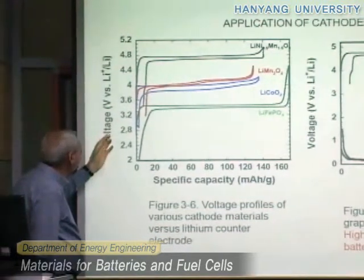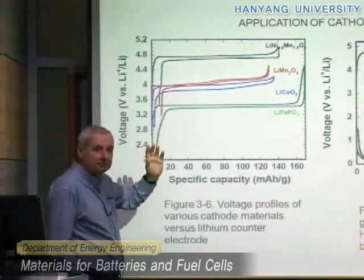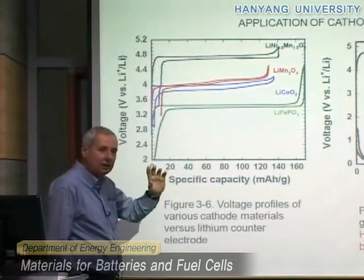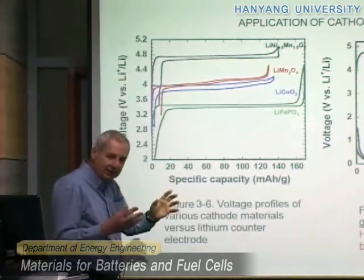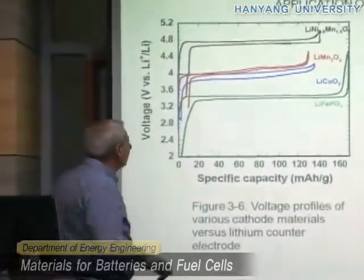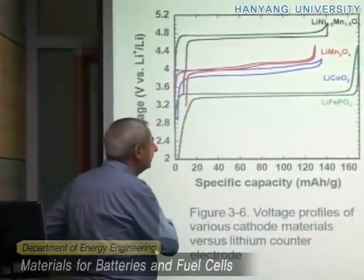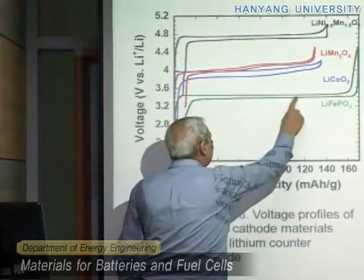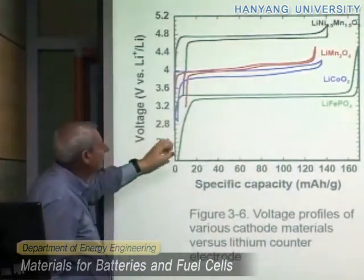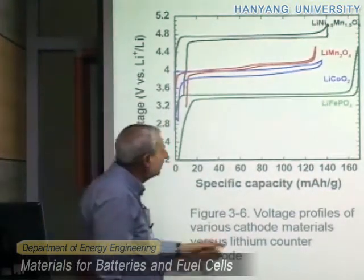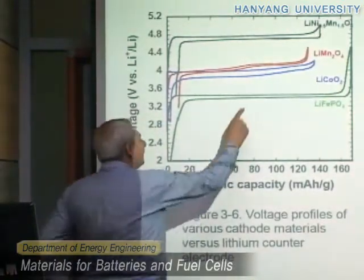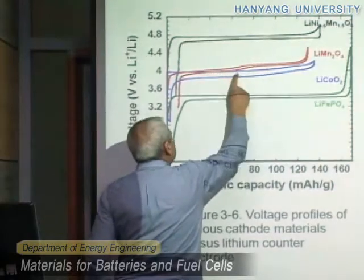This is the voltage profile versus lithium. Remember that both the anode and the cathode material before using in a real lithium-ion battery are checked and tested in a semi-cell using lithium as a reference electrode and as a counter electrode. So as I say, lithium iron phosphate is working around 3.5 volts. You see this one is a very good material, probably carbon coated because it gives almost the theoretical capacity. Lithium cobalt oxide is working around 4 volts, as I said.